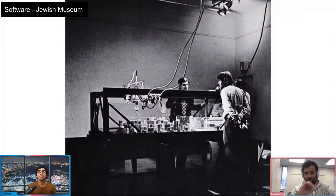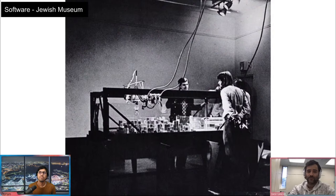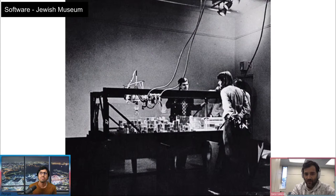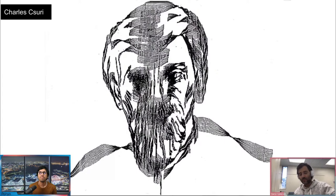That same year, 1968, there was also an exhibition in Brooklyn, New York, called Some More Beginnings. In the background you can see Kenneth Knowlton's reclining nude, which we'll look at later — a very well-known early graphic work of art. And then just two years later, in 1970, there was another exhibition in the Jewish Museum in New York City called Software. You can see this gantry and machine that's going back and forth, picking up blocks — it wouldn't feel too out of place today.